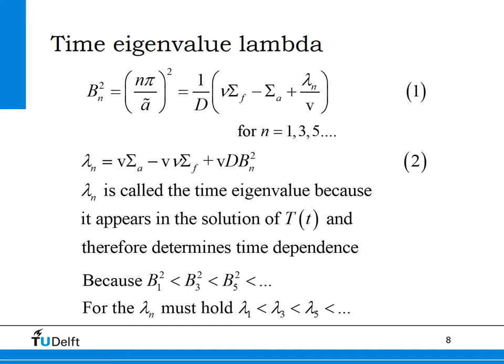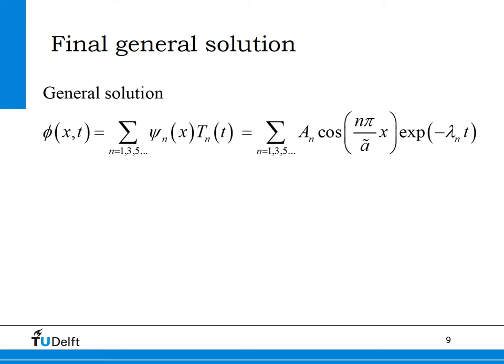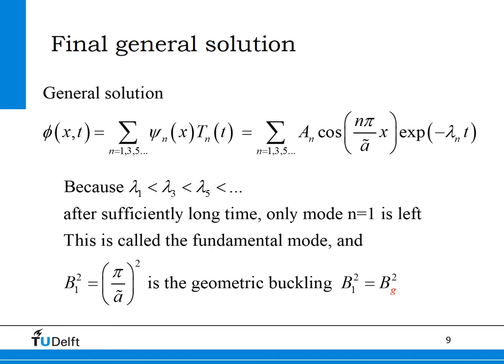Because minus lambda determines the rate of increase or decrease in time of the neutron flux, after sufficiently long time only the mode with the smallest value of lambda, lambda-1, will remain. This means that after any distortion of the neutron flux, all higher modes will decay quicker than the fundamental mode, and after sufficiently long time only the fundamental mode with lambda-1 remains. The general solution for the neutron flux in the bare homogeneous slab reactor is made up of cosine functions, each decaying or increasing in time. The buckling corresponding to the fundamental mode is called the geometric buckling, indicated with index G.